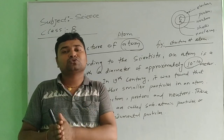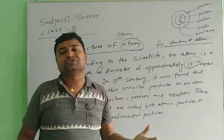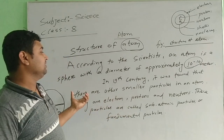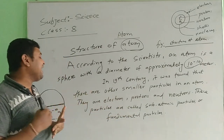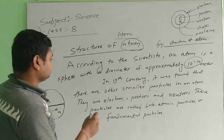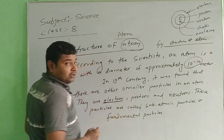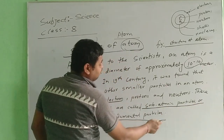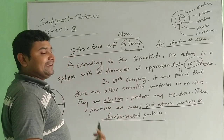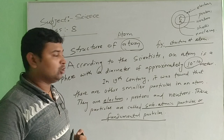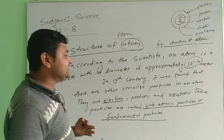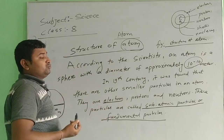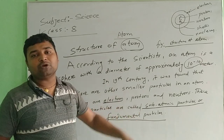Electron, proton, and neutron are inside the atom. These particles are also known as subatomic particles, or we can also say fundamental particles. What are the fundamental particles? That is: electron, proton, and neutron. Or we can also say — what are the subatomic particles? The smallest particles of an atom, which are electron, proton, and neutron, are called subatomic particles.